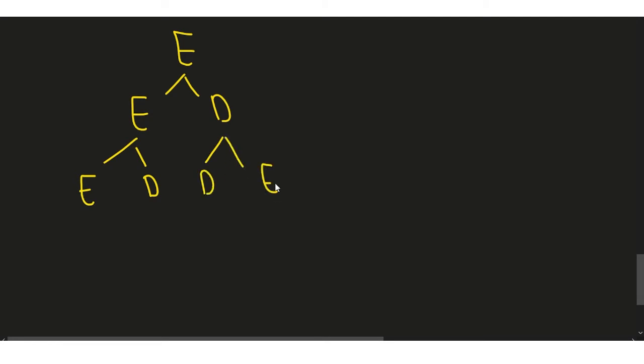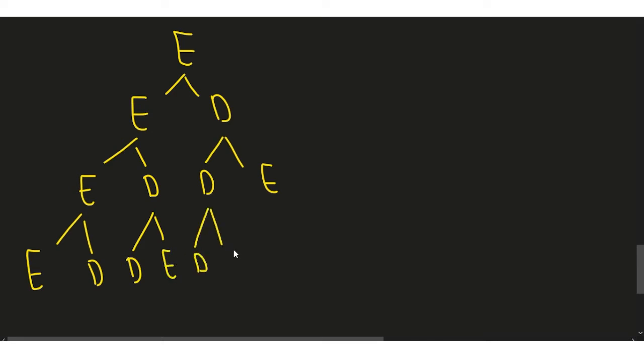So the generation starts with an engineer. That engineer has a first child who is an engineer and a second child who is a doctor. That engineer then has a first child as engineer and a second child as doctor. The doctor has a first child as doctor and a second child as engineer. This engineer has a first child as engineer and second child as doctor, and so on — this is how the family tree looks.